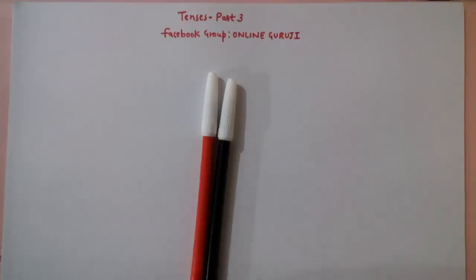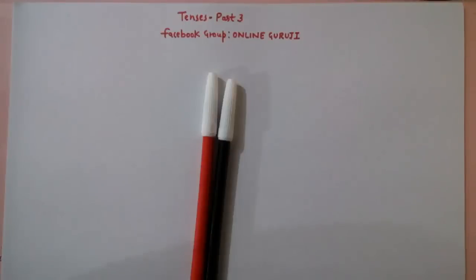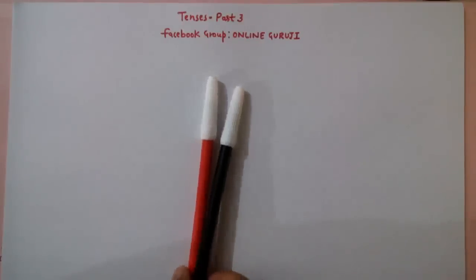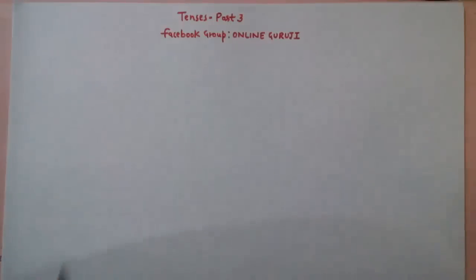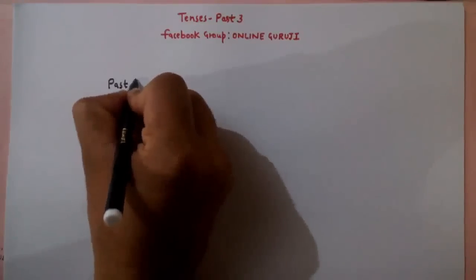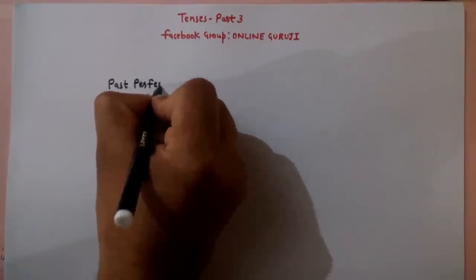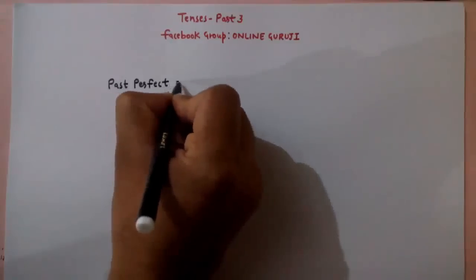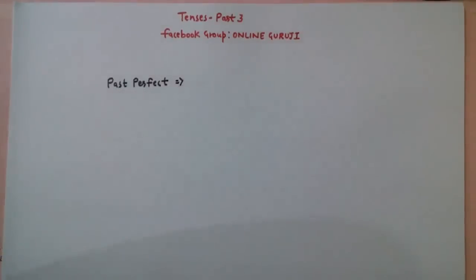चलो Past Perfect Tense start करते हैं. Hopefully अभी तक tenses पे जितने lecture, दो ही lecture हम लोगों ने discuss किये हैं, वो दोनों lecture आप लोगों को अच्छे से समझ में आ रहा होगा. Past Perfect का basic structure क्या होगा? देखो, perfect है तो perfect के helping verb क्या होते हैं — has, have — आप लोगों को पता है, but क्योंकि ये past पे हैं, तो has/have किस पे change हो जाएगा?